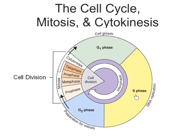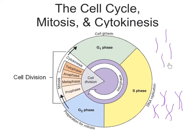The S phase of the cell cycle stands for synthesis. This is when DNA replication occurs. During G1, all of the chromosomes are just single chromosomes. But when the DNA is replicated, it's copied, so you end up with two copies of every chromosome. Each chromosome is now made up of two identical sister chromatids. We've increased the amount of DNA but have not changed the number of chromosomes.